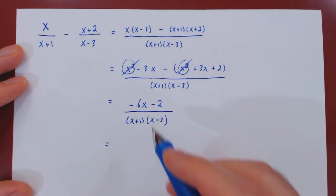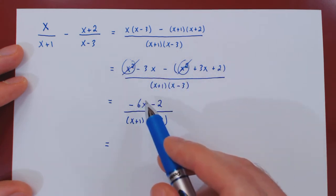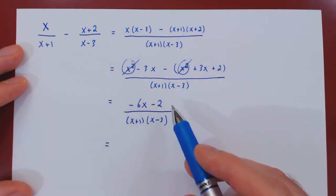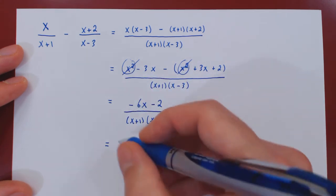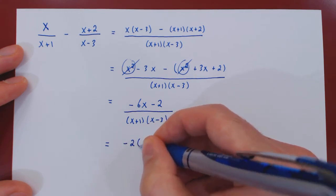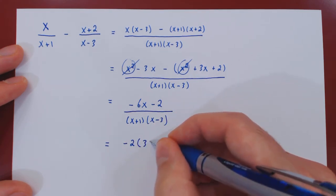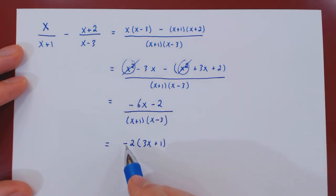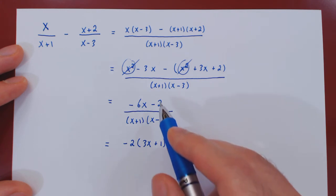And one last step. Now we have simplified the numerator, but there is an obvious common factor on top, which is negative 2. So we can factor out negative 2, and then we're left with 3x plus 1. And you can check, if you multiply back, negative 6x, check, negative 2, check,